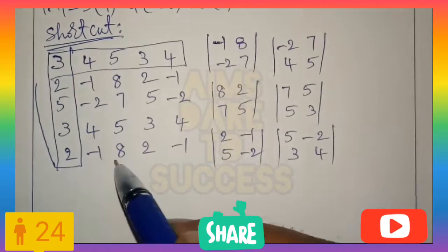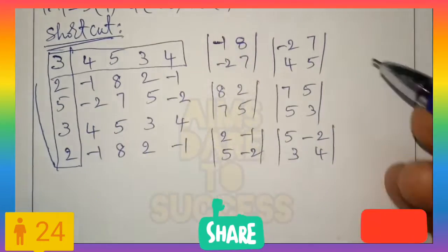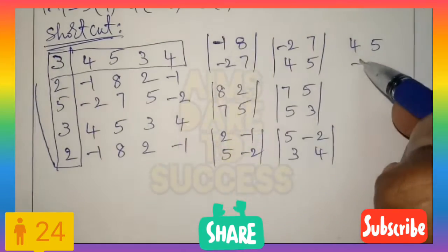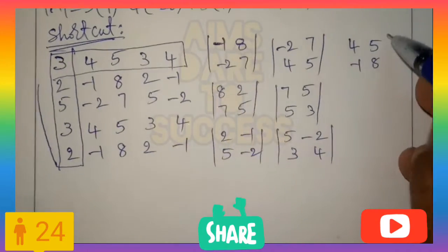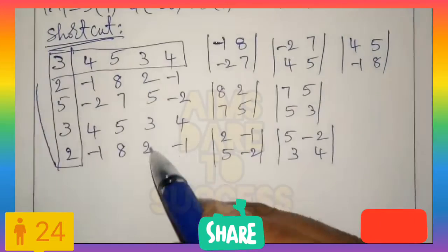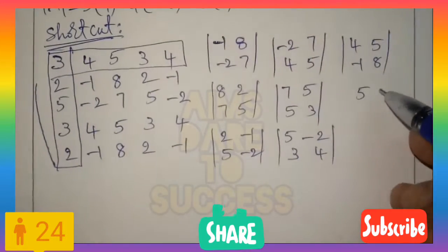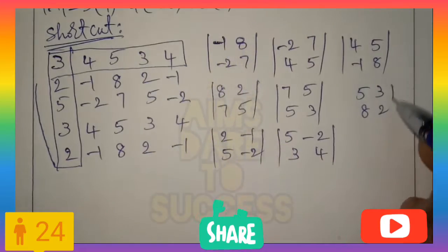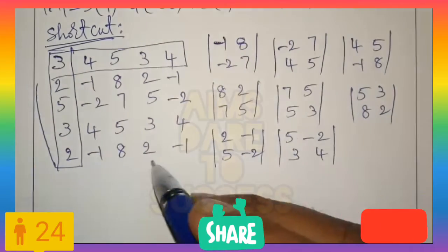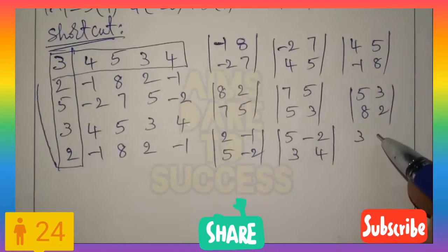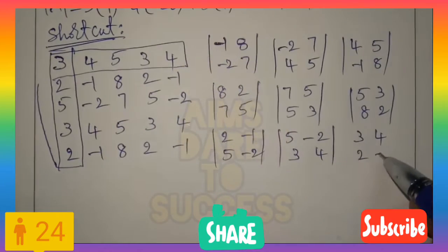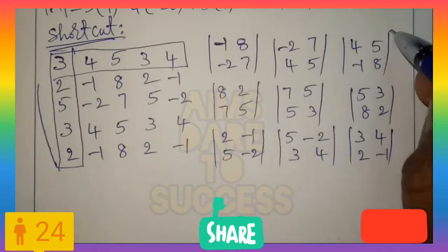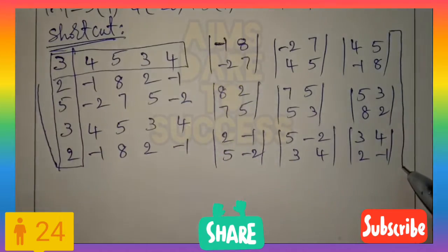The reason we are writing column-wise is because we are applying transpose — the interchanging of rows and columns is called transpose. So: 4, 5 / −1, 8 — write in third column. Next: 5, 3 / 8, 2 — write in third column. Next: 3, 4 / 2, −1 — write in third column.